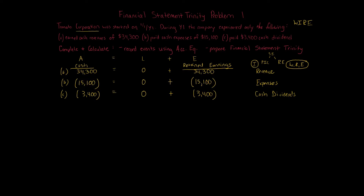We've gone through all three transactions and in each case the accounting equation balances. The ending cash balance is $15,800, liabilities are zero, and retained earnings has a balance of $15,800. It balances at the end as well. That information will be very important for the next parts of the question.